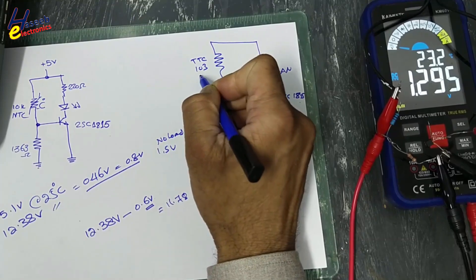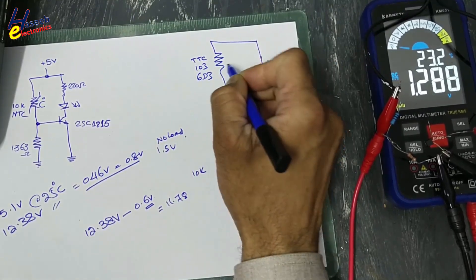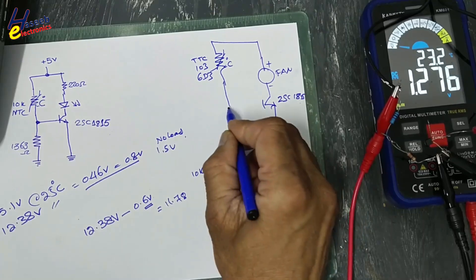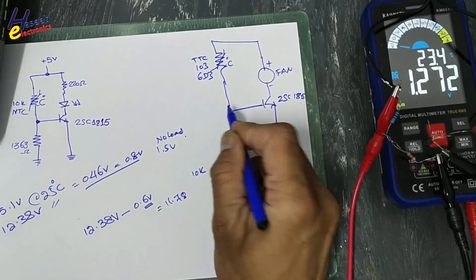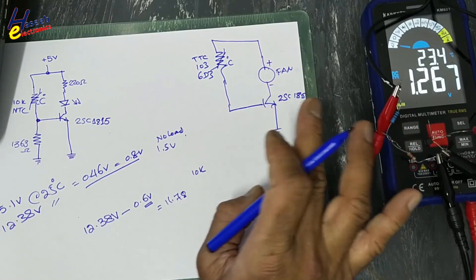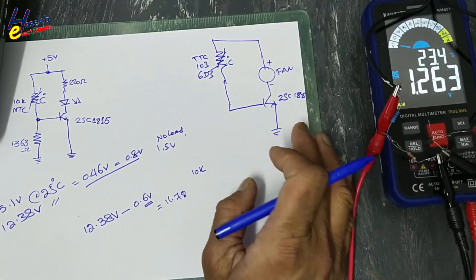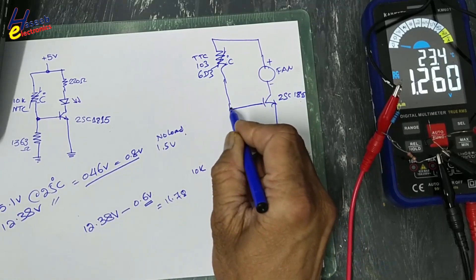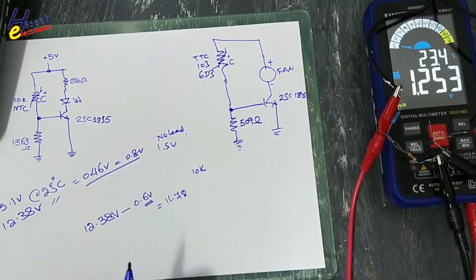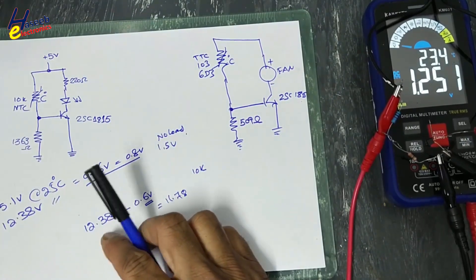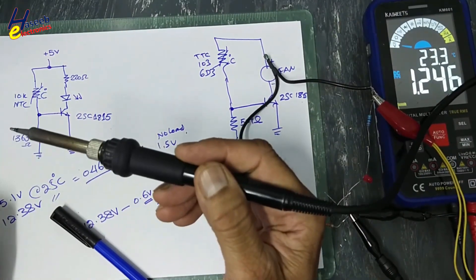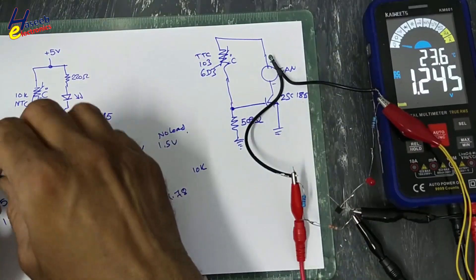The NTC is the TTC-103-6D3-103 series — a negative temperature coefficient resistor. We will feed this directly to the base because we don't need any gain; we are just switching this transistor, and the voltage will remain in safe limit. If it exceeds the breakdown voltage, we would need a resistor. We need a 509 ohm resistor. I will connect two resistors in parallel.